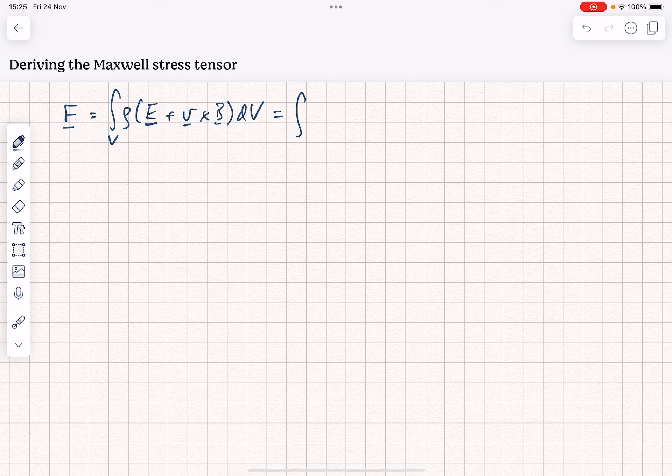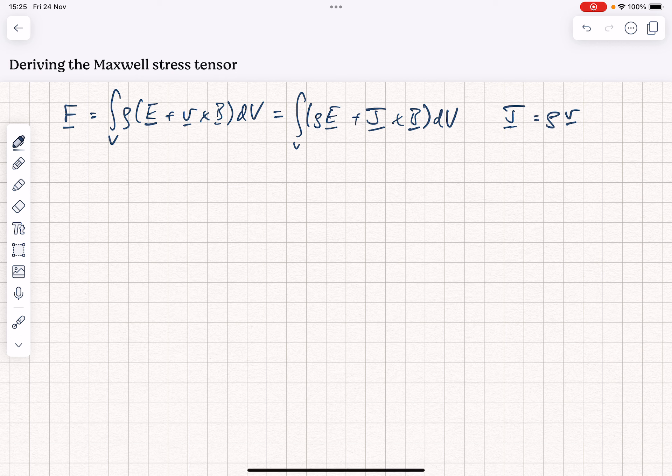which of course we then rewrite as the volume integral of rho E plus J cross B, where J is the current density, which we say is equal to rho multiplied by the velocity.